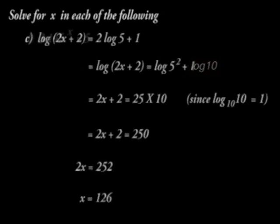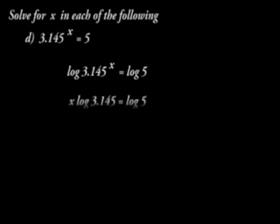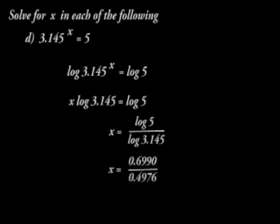Finally, for d, 3.145 raised to power x is equal to 5. When we write that in form of logs, we have log 3.145 raised to x is equal to log 5. If we follow rule 3, we can have x log 3.145 is equal to log 5. To find x, we divide both sides by log 3.145 and we end up with x as 1.4.